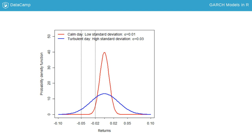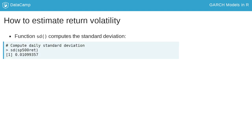On a calm day there is almost no chance of losing more than 5%, but on a turbulent day it becomes likely to lose more than 5%. Getting the volatility right is thus of utmost importance.